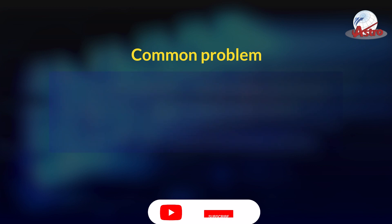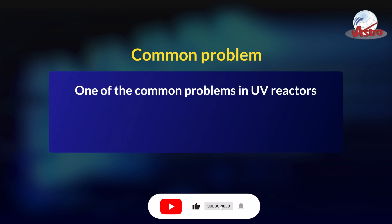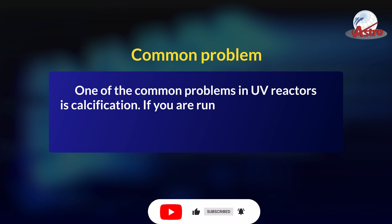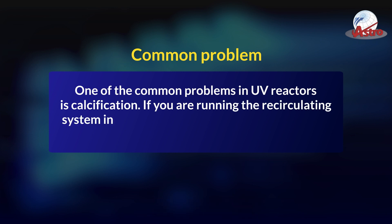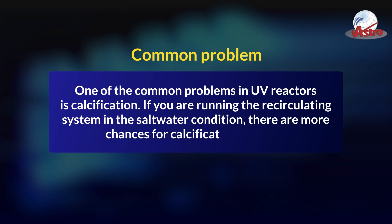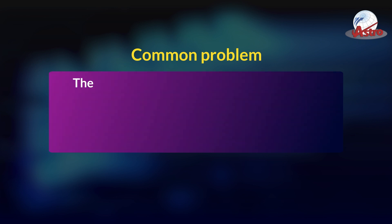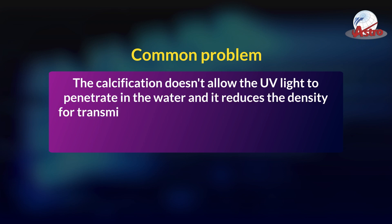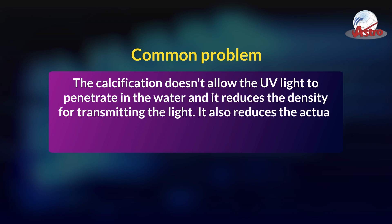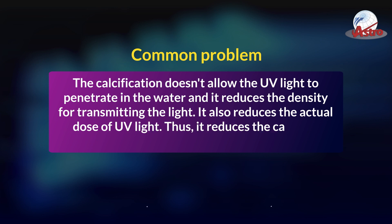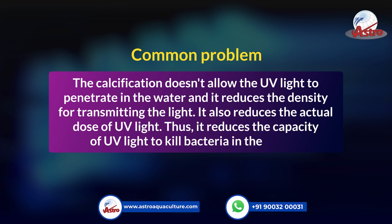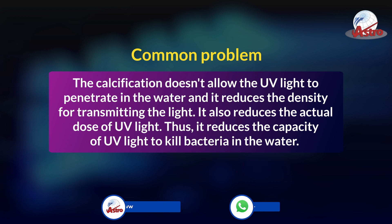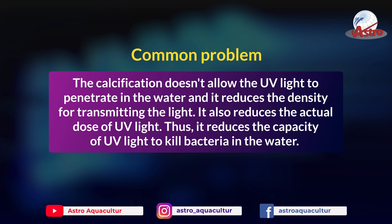Common problem: One of the common problems in UV reactors is calcification. If you are running the recirculating system in saltwater conditions, there are more chances for calcification to occur. Calcification doesn't allow UV light to penetrate the water, reducing the density for transmitting the light and also reducing the actual dose of UV light, thus reducing the capacity of UV light to kill bacteria in the water.